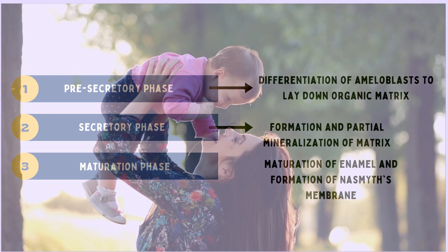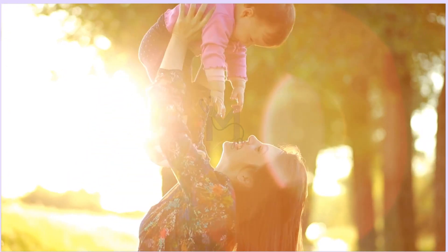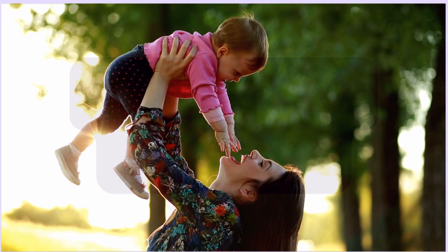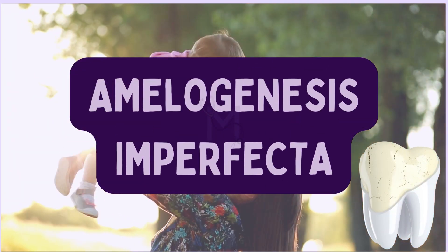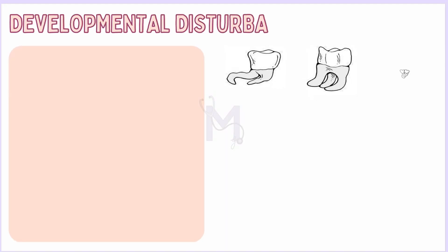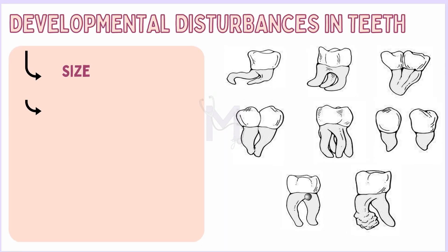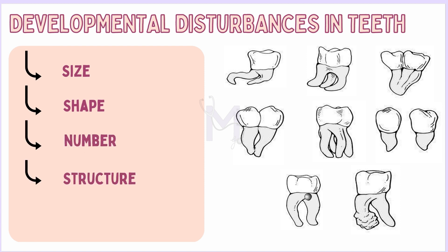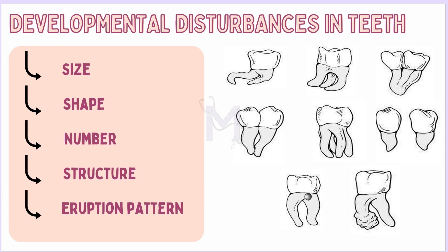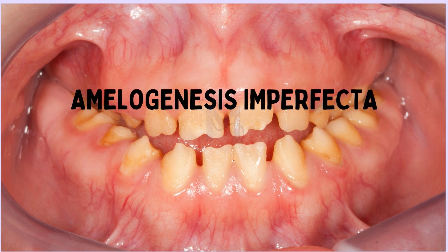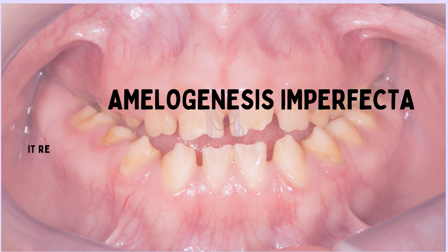Disturbances in any of these stages can lead to the development of a complex group of disorders known as amelogenesis imperfecta. Developmental disturbances in teeth can result in abnormalities in the size, shape, number, structure, and eruption pattern. Today, we will be studying an abnormality in the structure of teeth known as amelogenesis imperfecta.